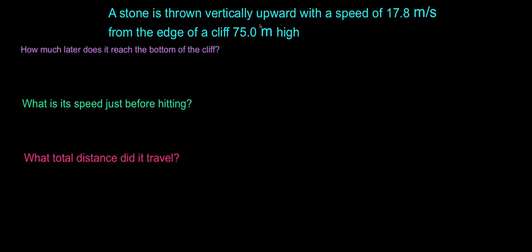In this problem we have a stone that is thrown vertically upward with a speed of 17.8 meters per second. So that's going to be our initial velocity we're throwing with, 17.8 meters per second, from the edge of a cliff that is 75 meters high.